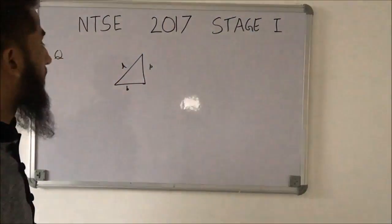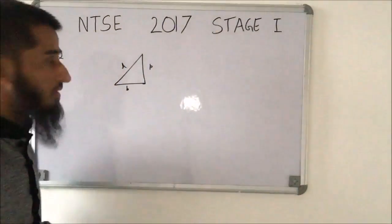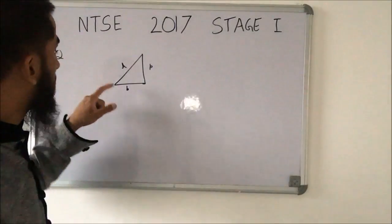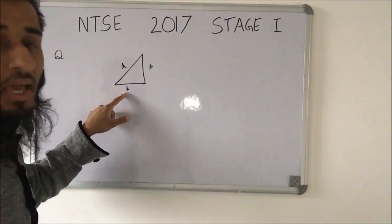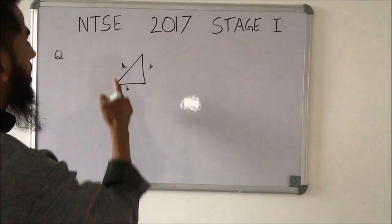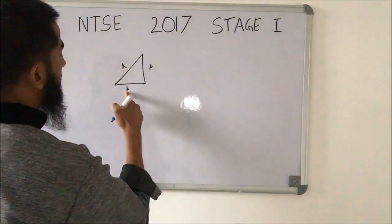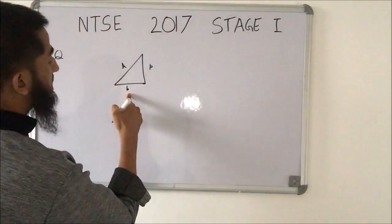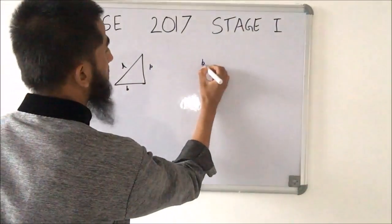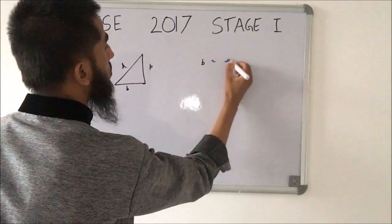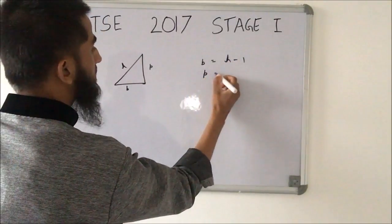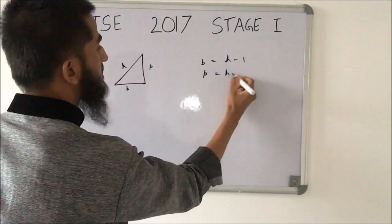This question says that in a right-angled triangle, the hypotenuse is 1 cm longer than the base and 2 cm longer than the perpendicular. So the base B equals h minus 1, and the perpendicular equals h minus 2.